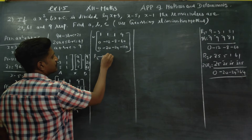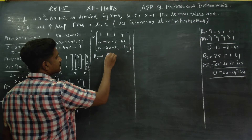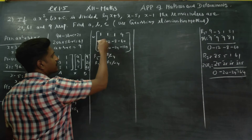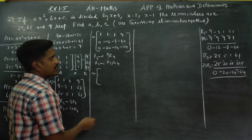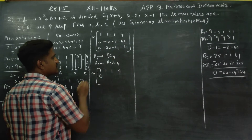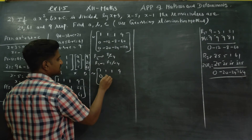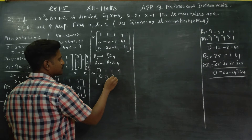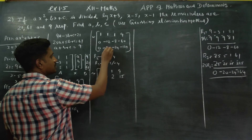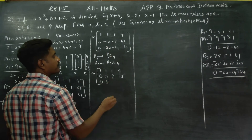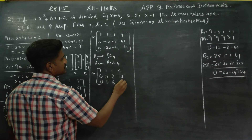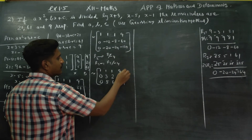Dividing R2 by -4 and R3 by -4. R2 becomes: 0, 3, 2, 15. R3 becomes: 0, 5, 6, 41. The first row remains: 1, 1, 1, 9.